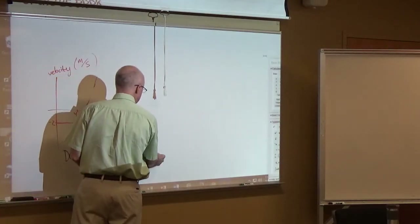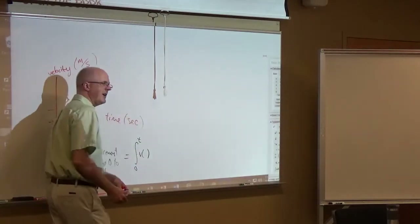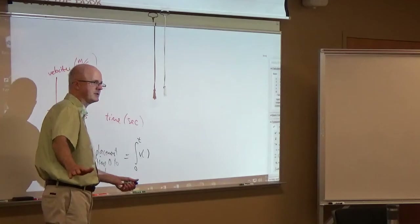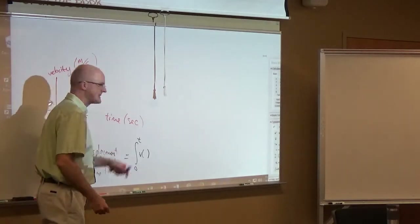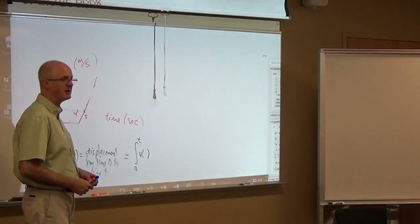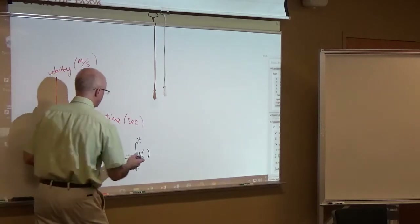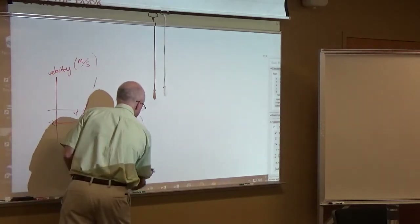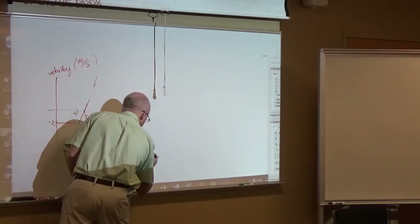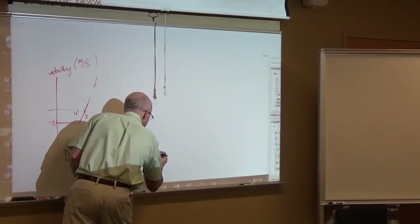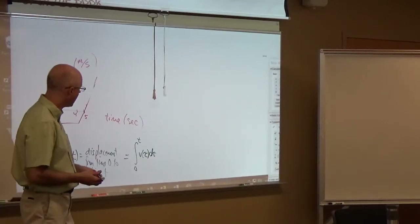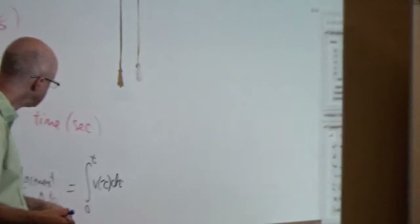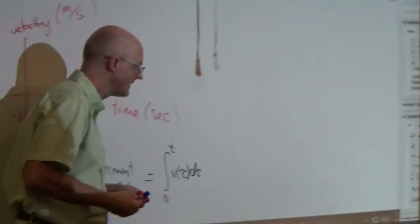Should I put a v of t dt in here? Physics professors often do — they don't worry about it. But I want to emphasize that the true variable for this function is the upper limit of the integral, so I'm going to use a different letter. Why don't I use the Greek version of t? Let's use tau. V of tau, d-tau. Tau kind of looks like a fancy t — it's a Greek letter.